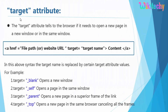Let's talk about the target attribute. The target attribute indicates how the link opens. It can be blank to open in a new window, self to open in the same window, parent to open a new page in a superior frame of the link, and underscore top to open a new page in the same browser cancelling all frames.